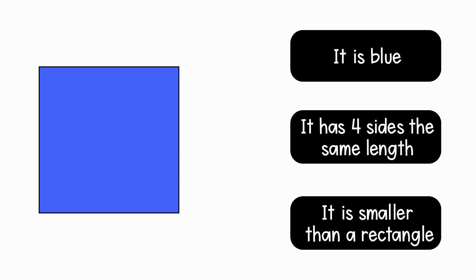It is blue. It has four sides the same length. It is smaller than a rectangle. Which one of these attributes is a defining or helpful attribute? It has to be an attribute that could help someone determine what shape it is. It has four sides the same length. It is a defining attribute. It can help someone figure out what shape is being described.